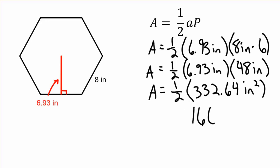Now the last step, we're just going to cut everything in half. You divide it by 2 in your calculator. 166.32 inches squared is the total area.